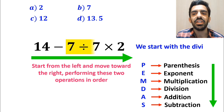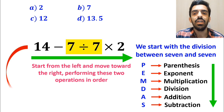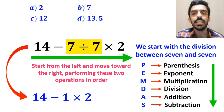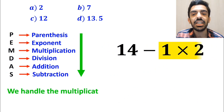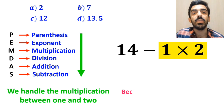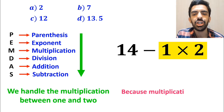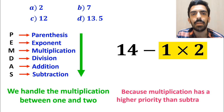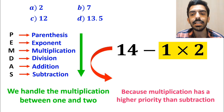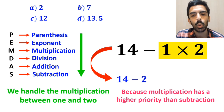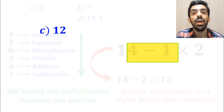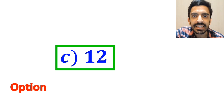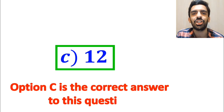So first we start with the division between 7 and 7, which simplifies this expression to 14 minus 1 multiplied by 2. In the final step, we handle the multiplication between 1 and 2, because multiplication has a higher priority than subtraction. And this expression simplifies to 14 minus 2, which ultimately gives us the answer 12. Therefore, option C is the correct answer to this question.